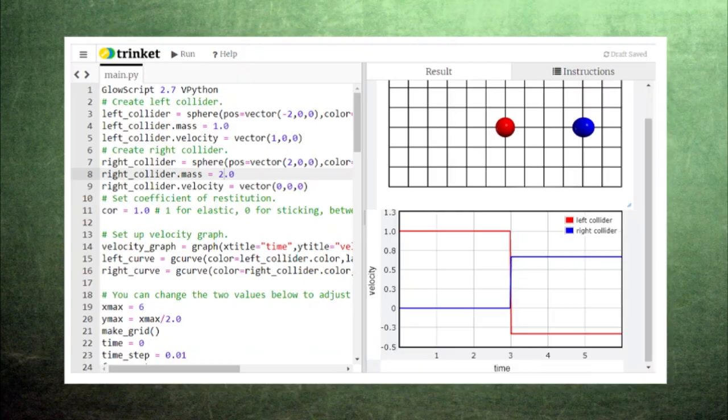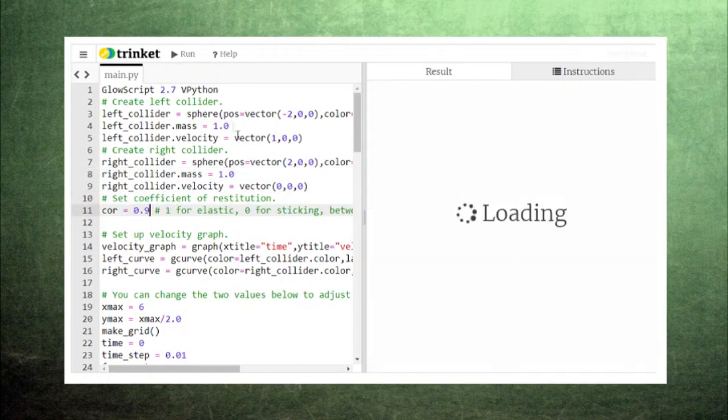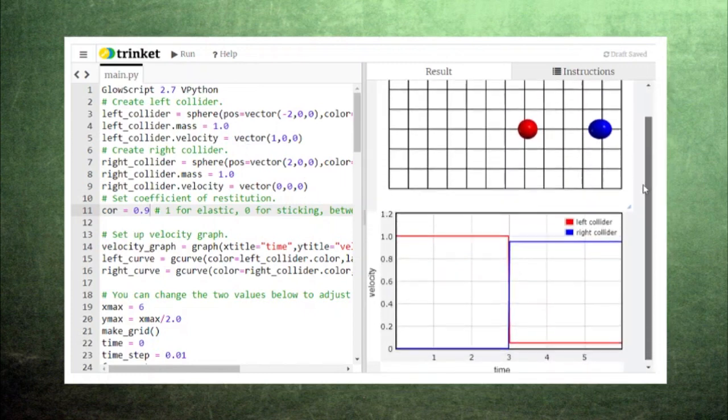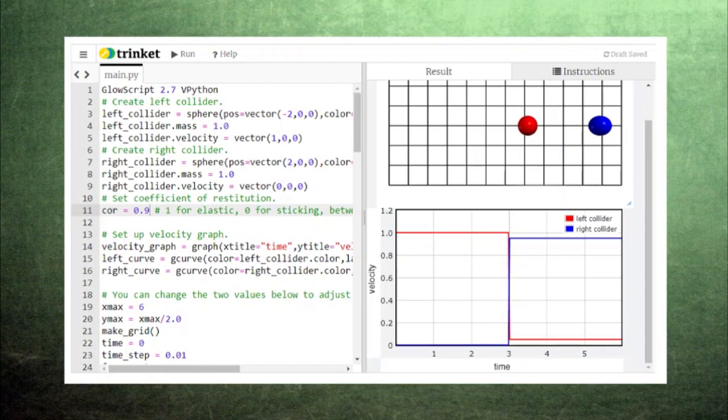Here is our code from the previous video that creates two colliders and then takes them through the three phases of a collision. Let's try the code with the left collider coming in and the right collider stationary and with both colliders having the same mass. Let's start out with a coefficient of 0.9. The left collider gives most of its momentum to the right collider, but it also keeps a little momentum and so it continues to move forward at a slower velocity.